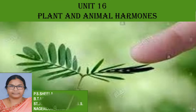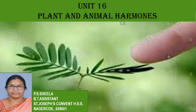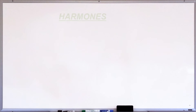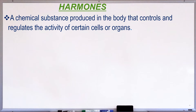Good morning girls. Today we shall learn unit 16: plant and animal hormones. What are hormones? Hormones are chemical substances produced in the body that control and regulate the activity of certain cells or organs.